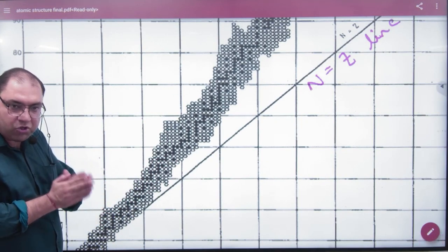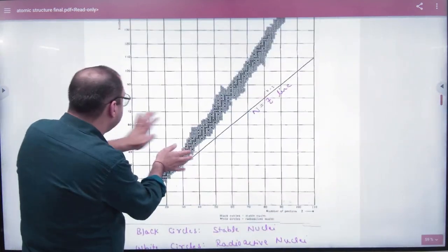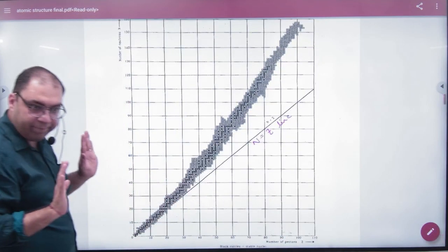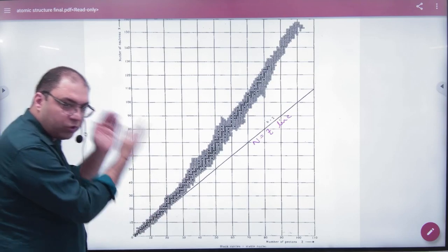In N and Z's ratio, if there is an element above the graph, that means that N is large and Z is small. Neutrons are more and protons are less.